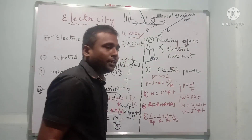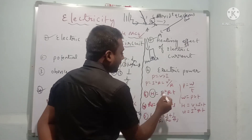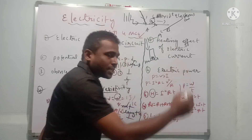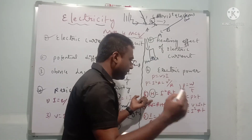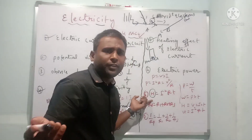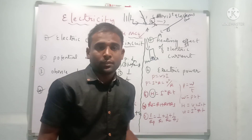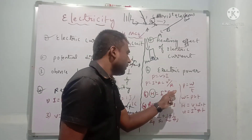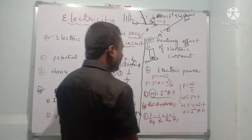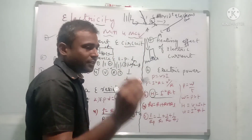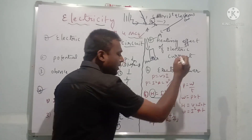The heating effect is explained by the famous scientist Joule. Joule's law states that the amount of heat energy produced in a conductor is proportional to the square of current, resistance, and time taken. So H = I²RT. If current increases, heat increases. If resistance increases, heat increases. If time increases, heat increases. Examples: electric water heater or iron box.